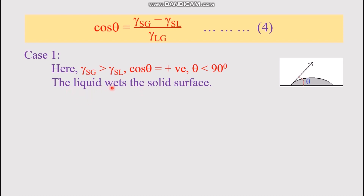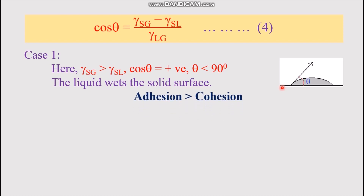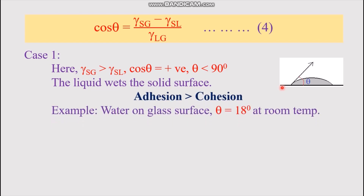Adhesion is greater than cohesion in Case 1. For water on glass, the contact angle is 18° at room temperature. At 25°C, the surface tension of water is 72 dyne/cm in CGS units.